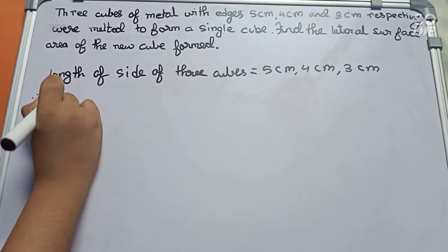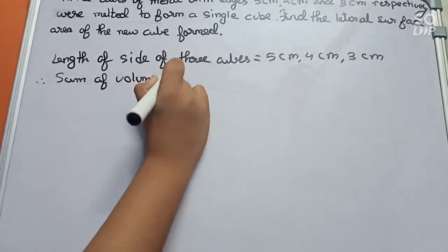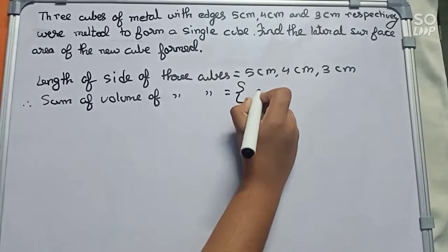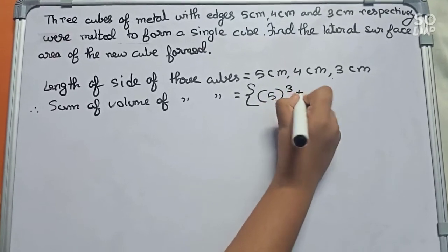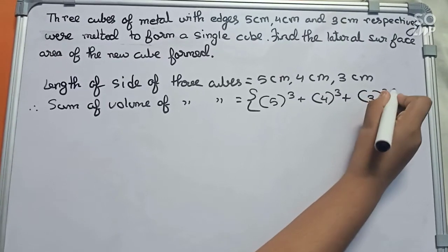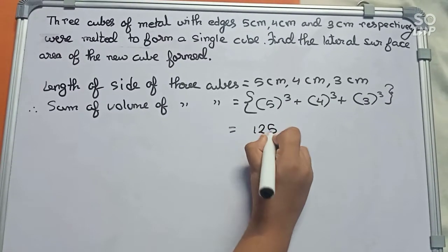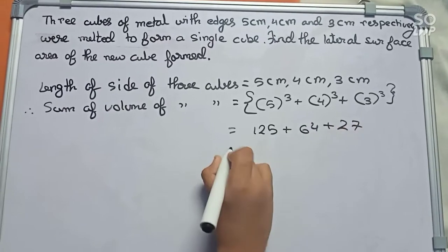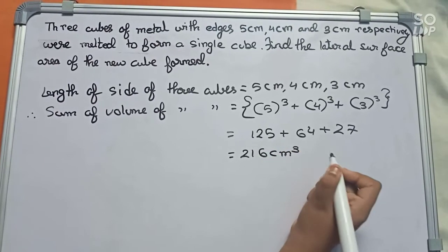So it will become like this: 5 cube plus 4 cube plus 3 cube. It will become 125 plus 64 plus 27, so it becomes 216 centimeter cube. So this is the total volume.